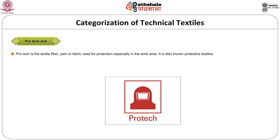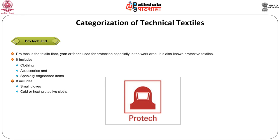The next category is protection textiles, commonly known as pro-tech. This includes fibers, yarns and fabrics used for protection especially in work areas. It includes clothes and accessories specially designed for safeguarding individuals from harsh environments like smoke, heat and chemicals. This group of textiles is indicated by a helmet. These fabrics range from small glasses and heat protective clothes to bullet and bomb proof jackets. You can see pictures of flame retardant apparels and bullet proof jackets.